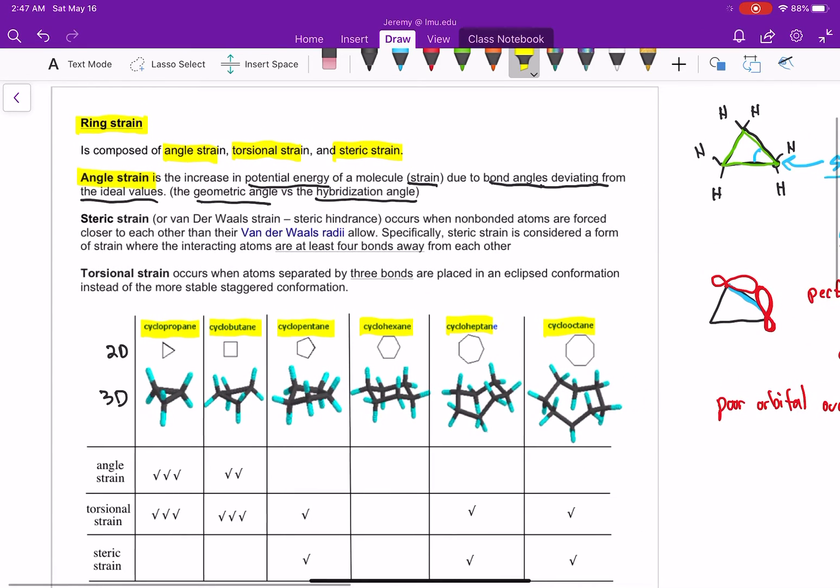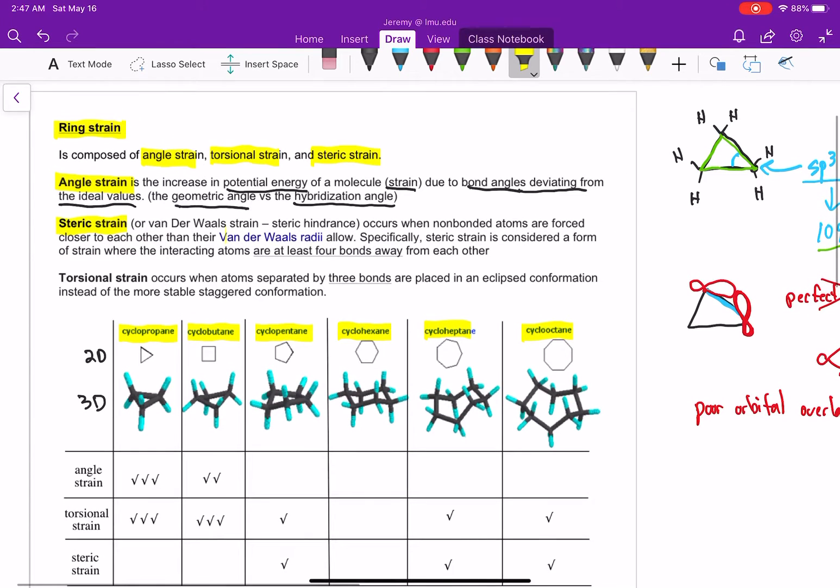Next, let's talk about the next strain, steric strain. Steric strain, or Van der Waals strain, occurs when non-bonded atoms are forced close to each other, closer to each other than their Van der Waals radii allow. We talked about this in a previous video. Atoms are surrounded by electron clouds.